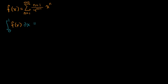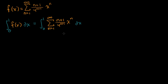Let's just rewrite this a little bit. This is going to be the same thing as the integral from zero to one of f(x), which is the sum from n equals one to infinity of (n+1) over 4 to the (n+1) times x to the n. Now what I'm about to do might be new to some of you, but we're taking a definite integral of a sum of terms, and that's the same thing as taking the sum of a bunch of definite integrals.